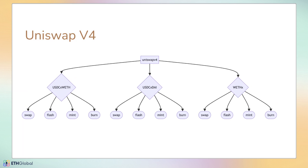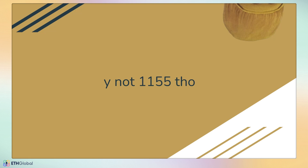Uniswap v4 — still a work in progress — is architecturally similar to v3 but everything is contained in a single singleton contract. Every market is managed under the same contract, and they're currently using ERC-1155 to handle the multi-token system. I actually opened a pull request to try out ERC-6909 as a comparison — they're functionally the same, you don't lose any functionality, but there are pretty big code size and gas efficiency savings. More and more DeFi architectures are going to trend toward this singleton pattern for liquidity and gas efficiency reasons.